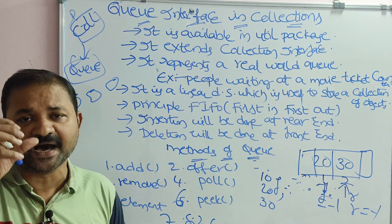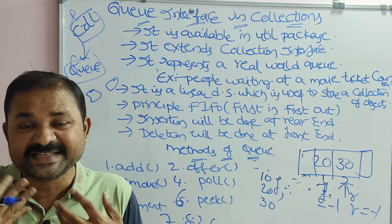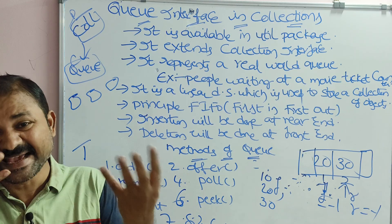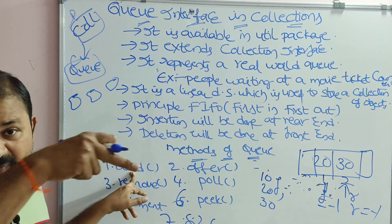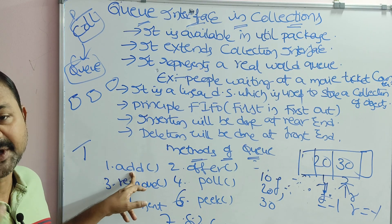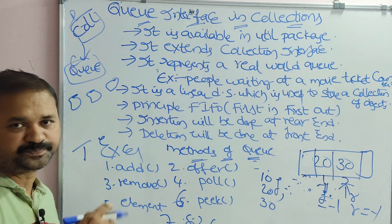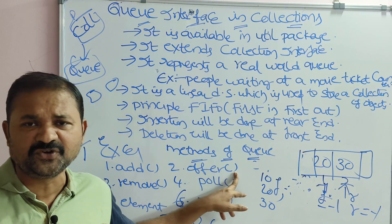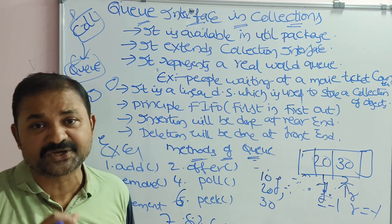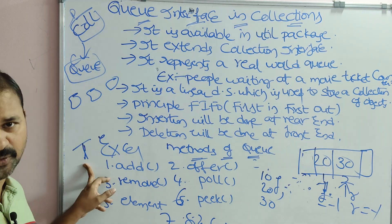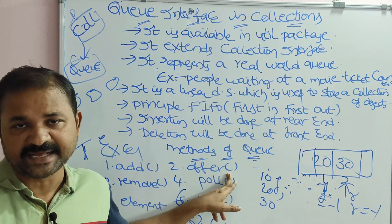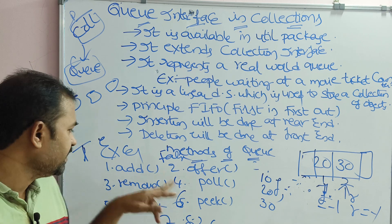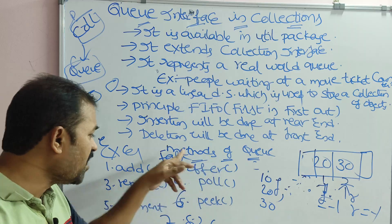The add method is useful to add an element to the queue. If insertion is successful, it returns true. If insertion fails — that is, when the queue is full — it returns an exception. The offer method is also used to add an element to the queue. If insertion is successful it returns true, but if insertion fails (queue is full), it returns false. This is the only difference: add returns an exception on failure, whereas offer returns false.